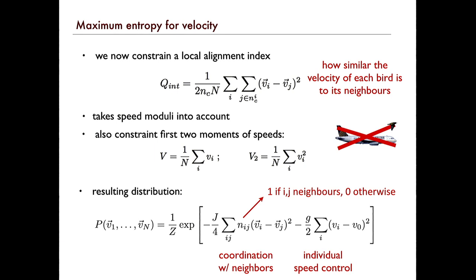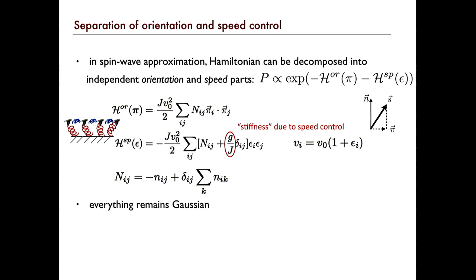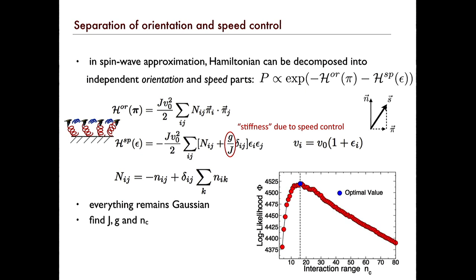The individual speed control term is like looking at your odometer because you know you have a speed limit of 80 kilometers per hour and you want to keep to it — that's your odometer, and that's all your other friends in your cars trying to do the same thing. We do this in the same speed spin wave approximation, which assumes the polarization of the flock. The interesting thing is that if you assume the flock is very polarized, the probability distribution separates into two independent terms — it factorizes. One corresponds to the orientation, the direction, and one corresponds to the speed. These two things are now separately controlled, and again everything remains Gaussian, making learning easy.